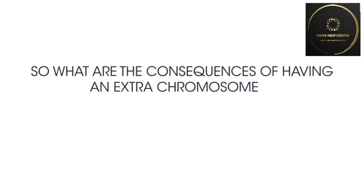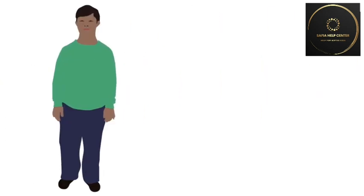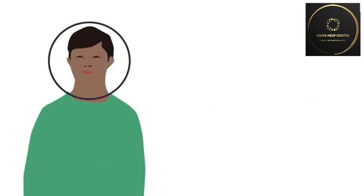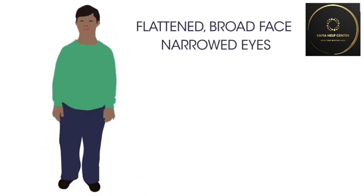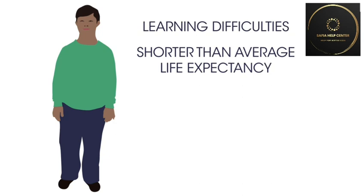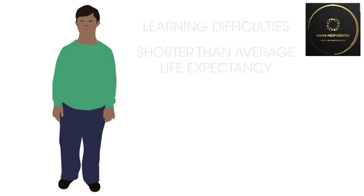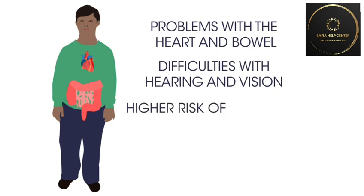So what are the consequences of having an extra chromosome for people with Down's syndrome? The difficulties vary in severity. Facial characteristics can include a flattened, broadened face and narrowed eyes, but people with Down's syndrome don't all look the same — they also look like their parents and family. People with Down's syndrome may have a lower than average IQ and a shorter than average life expectancy. Some conditions more common in people with Down's syndrome include problems with the heart and bowel, difficulties with hearing and vision, and a higher risk of infections.